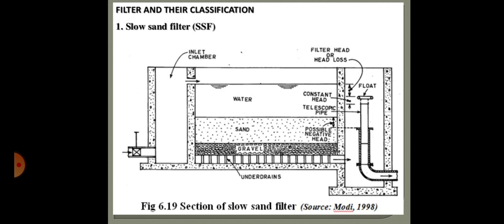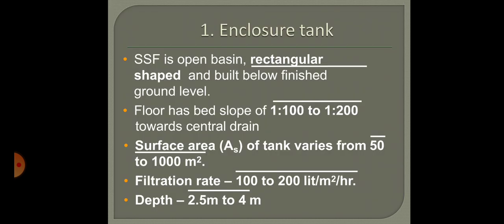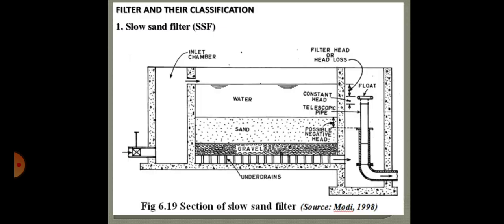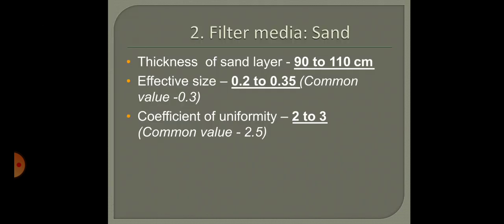Once microorganisms become well established, the filter works efficiently and produces high-quality effluent that is virtually free of disease-carrying organisms and biodegradable organic matter. Slow sand filters are suitable for treating waters with low color, low turbidity, and low bacterial content. In the next class, we will discuss the rapid sand filter, compare the two filters, and then move on to the design of both slow and rapid sand filters.